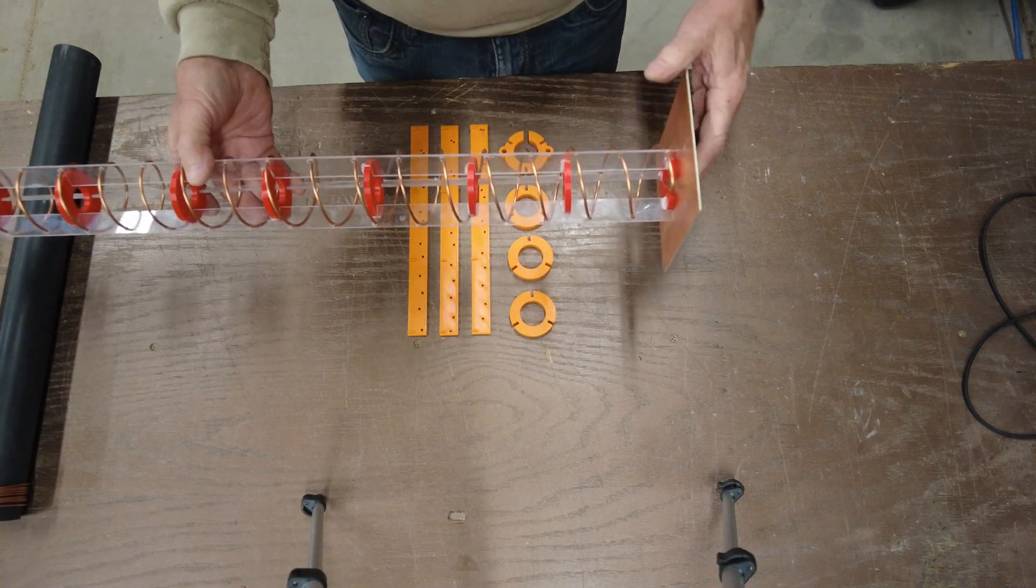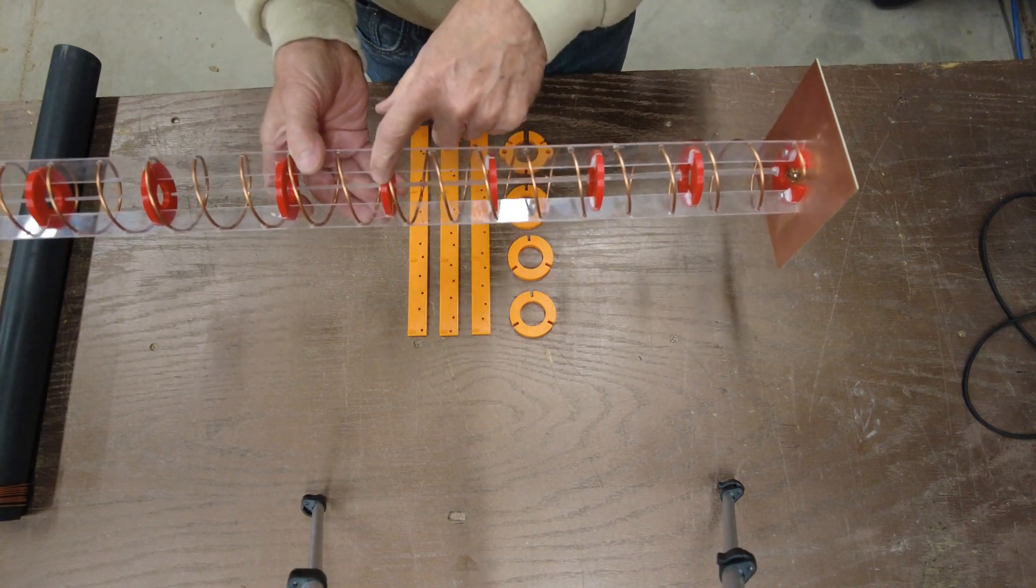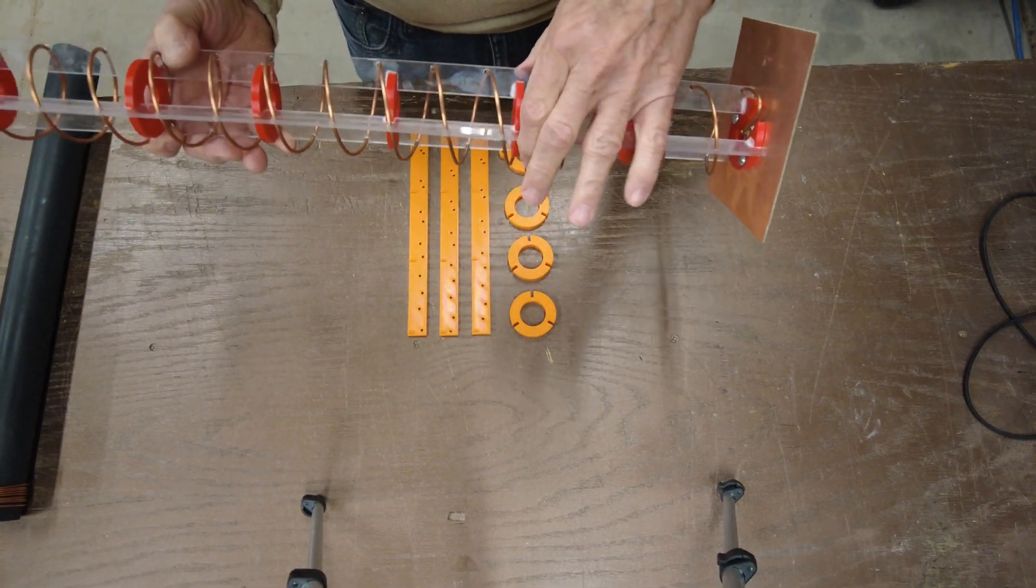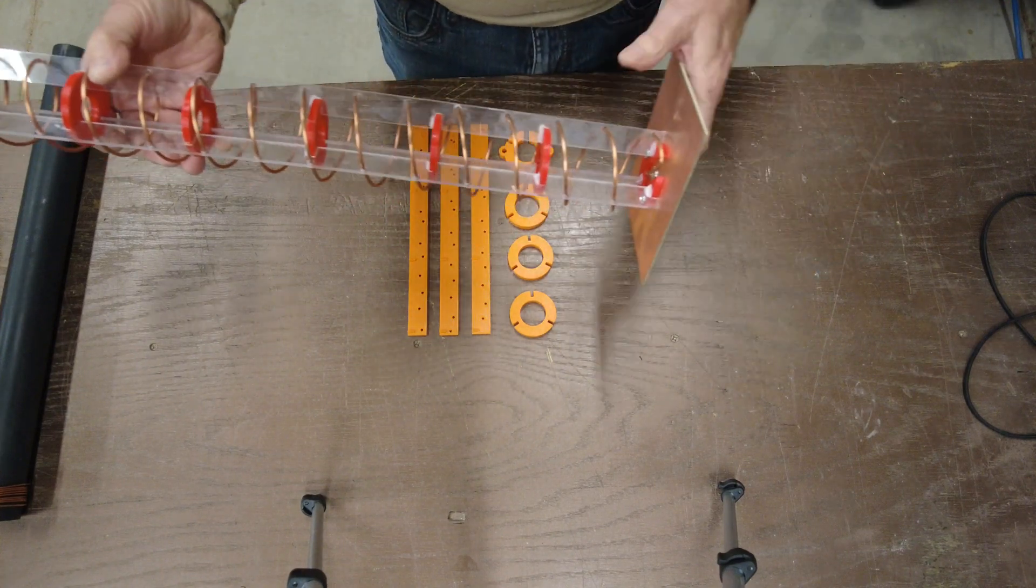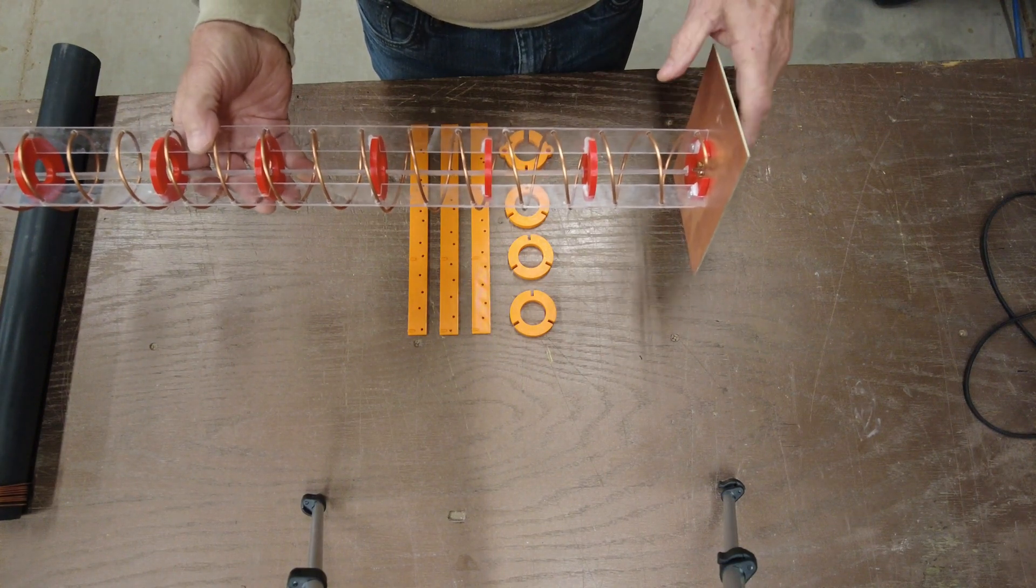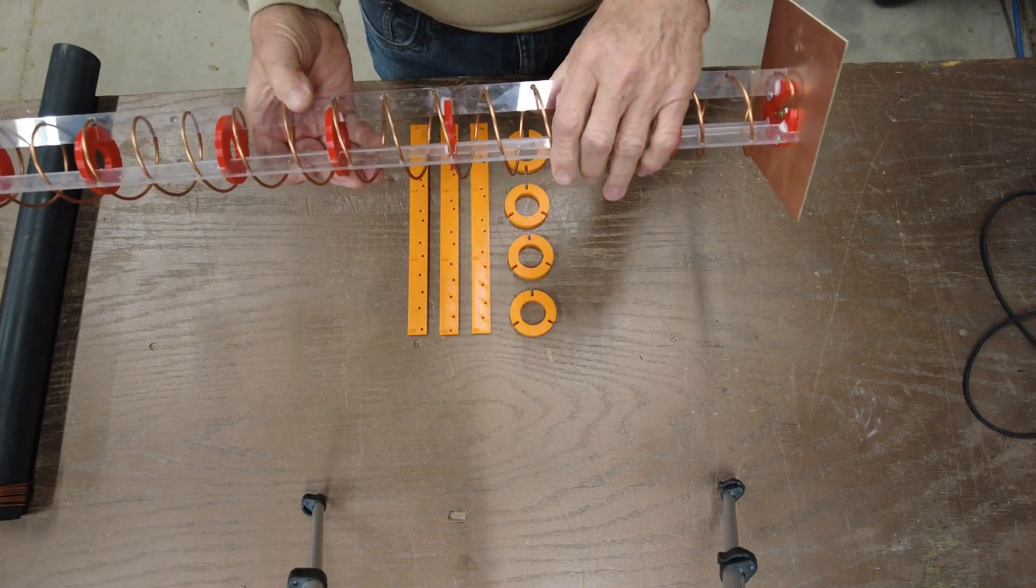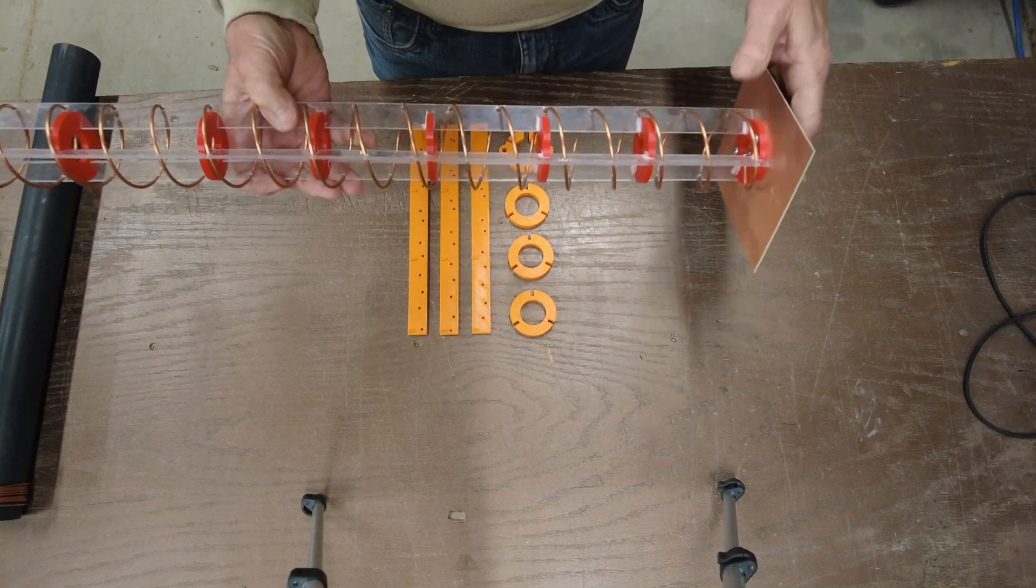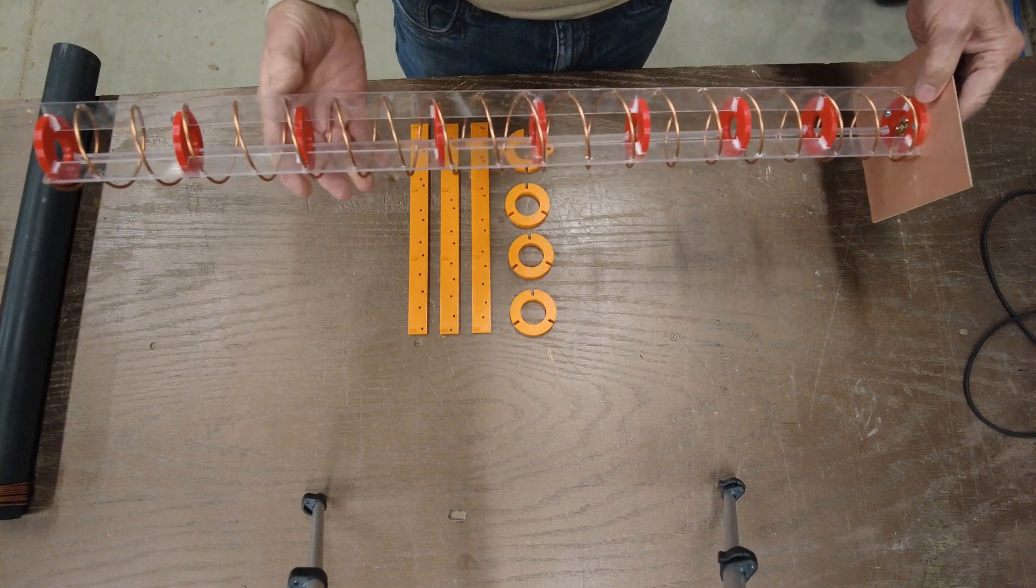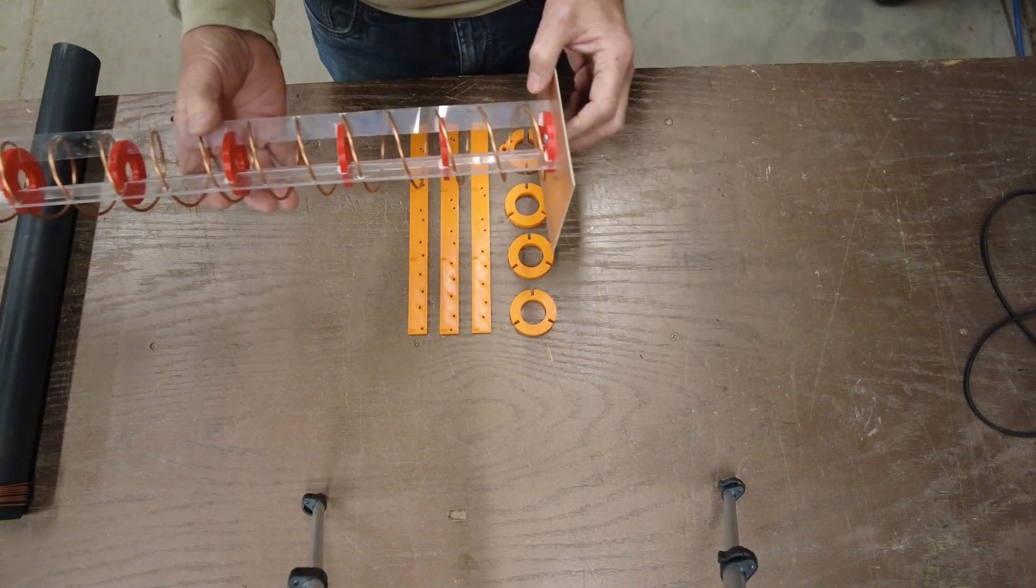Typically I've used 3D printed spacers, disc spacers with slots in them that I then put these struts in. I've always, for all the ones I've made, cut these struts out of some kind of thin plastic. In this case it's polycarbonate, and it works, but I've been hoping to come up with something that could be completely 3D printed.